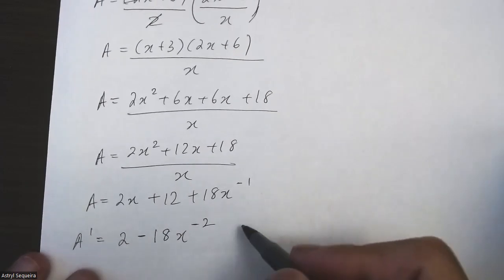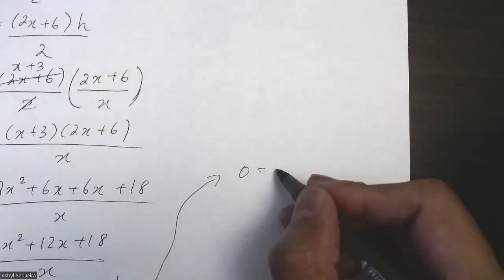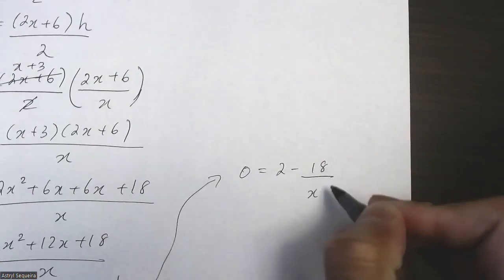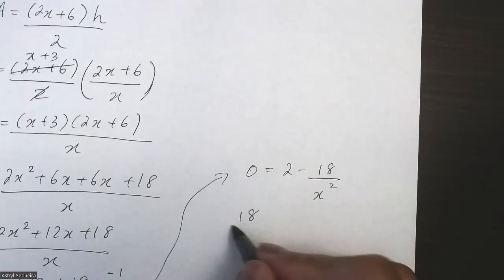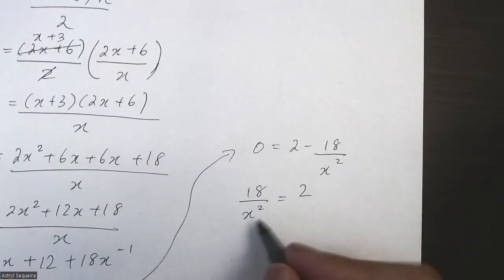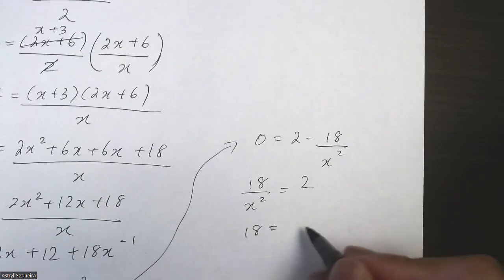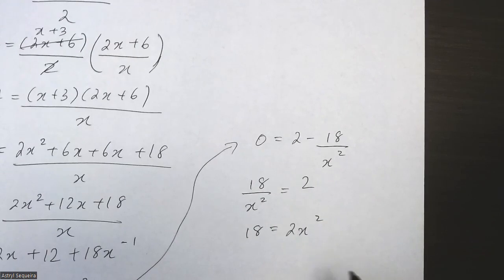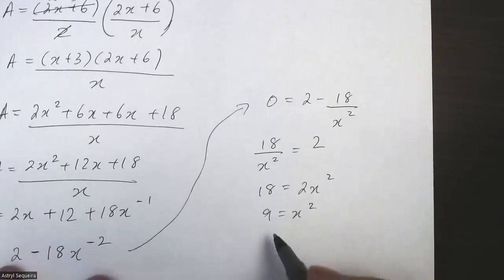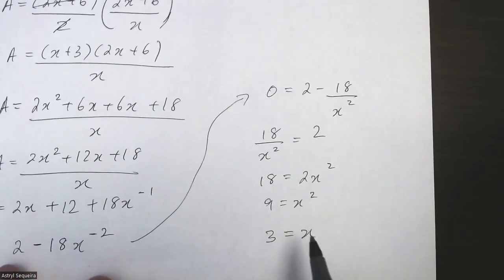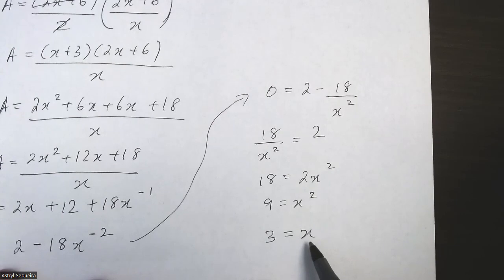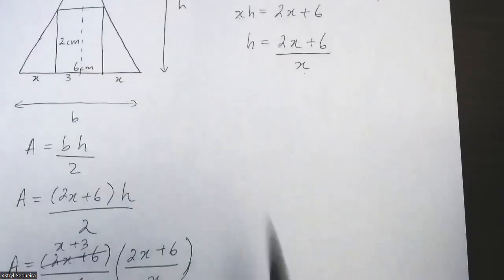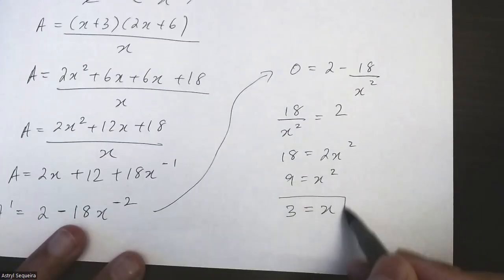And now we just want to solve it. I'm going to make A prime equals to 0, so 2 minus 18 over x squared. I'll move this to the other side, so 18 over x squared equals 2. I'll cross multiply the x squared over, so 18 equals 2x squared, and then I'll divide by 2, so 9 equals x squared. And when I square root, I don't have to worry about the negative number because the length of a side can never really be negative, so x equals 3. If I put a negative 3 for x here, this would just all be 0—it would not be a triangle anymore.